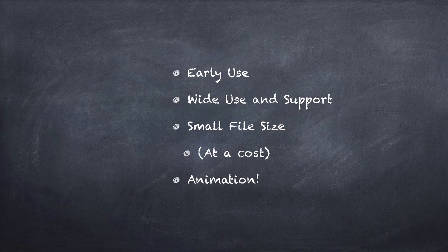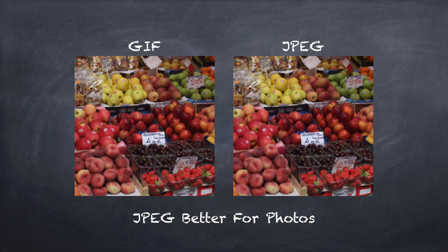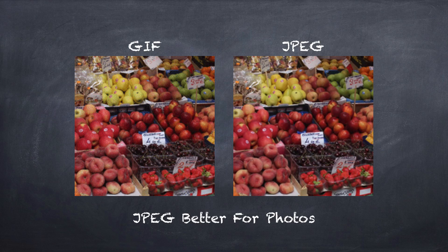That's what makes it pretty small but it also limits its quality. Animation is a big part of gifs and it's why they persist even though they're not the best format for regular images. As regular images, JPEG always wins when it comes to photographs. You can see here some parts of the photograph on the left — the gif image — look about the same as the JPEG, like the cherries or the strawberries. But if you look at the apples near the top you can see a lot of pixelation in the gif. JPEG looks better.